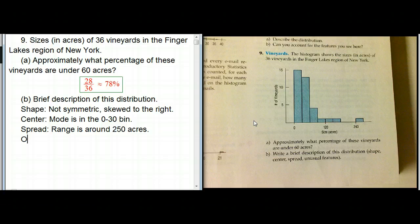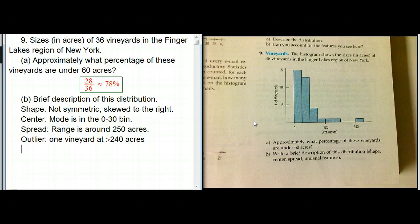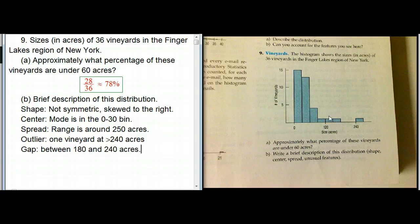And there seems to be maybe an outlier - one vineyard at greater than 240 acres - and there's a bit of a gap between 180 and 240 acres, which isn't too surprising when you've got such low numbers. Often there will be some empty bins. So that's a pretty good description. We've got something where the mode is pretty small, and it's skewed way to the right, very asymmetrical with what looks like an outlier and some gaps.